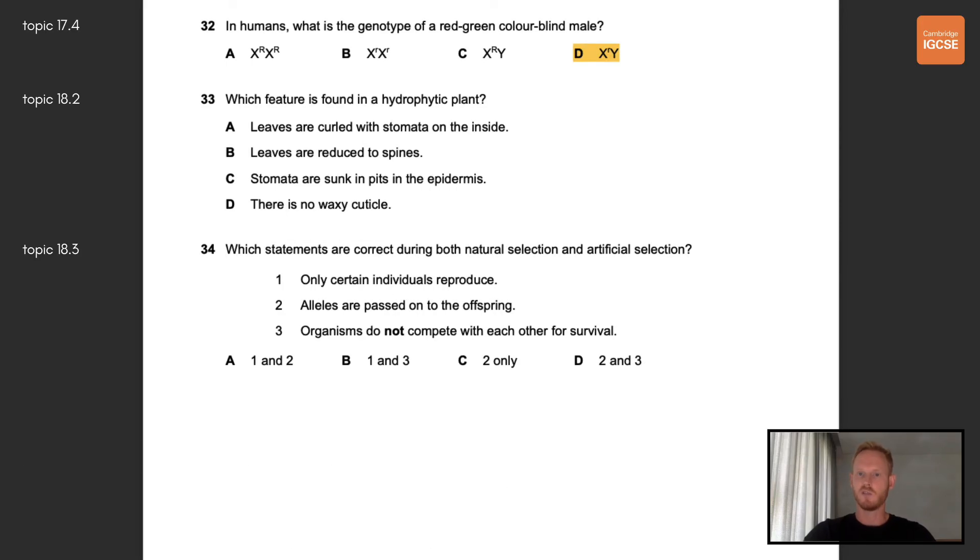Number 33, which feature is found in a hydrophytic plant? The correct answer here is D, there is no waxy cuticle. The role of the cuticle is to limit water loss, which hydrophytes, like water lilies, have no use for as they grow in water. Number 34, which statements are correct during both natural selection and artificial selection? Statements 1 and 2 are both true, only certain individuals reproduce and alleles are passed on to the offspring. Statement 3 however is false, as organisms do compete with each other for survival during natural selection. The correct answer is therefore A.